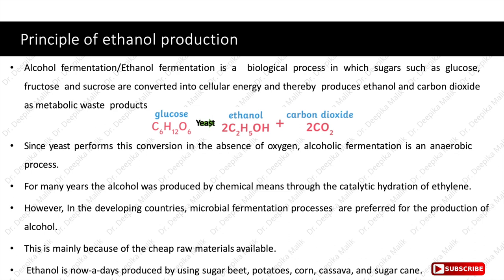For many years, alcohol was produced by chemical means through catalytic hydration of ethylene. However, in developing countries, microbial fermentation processes are preferred for the production of alcohol, mainly because of cheap raw materials available. Ethanol is nowadays produced by using sugar beet, potatoes, corn, cassava and sugarcane.